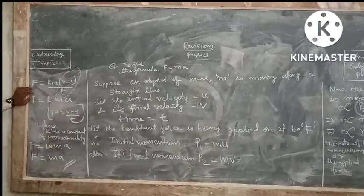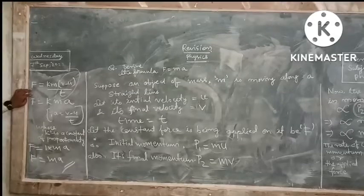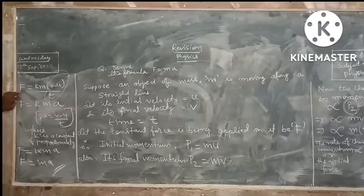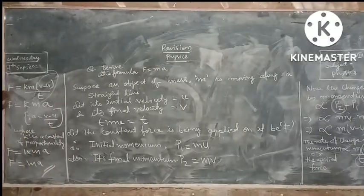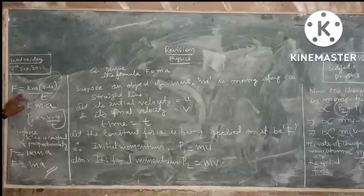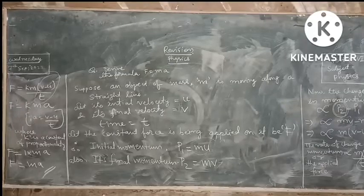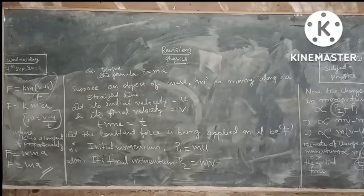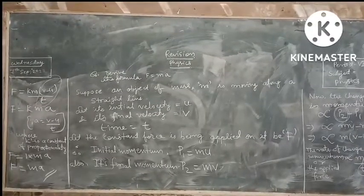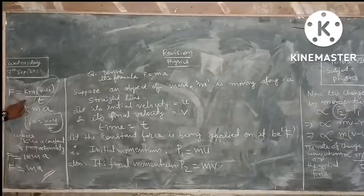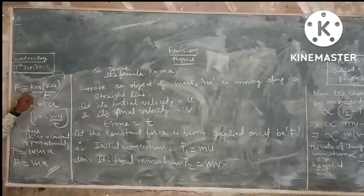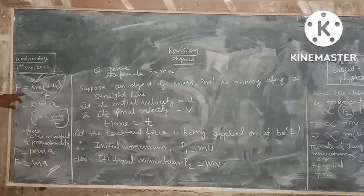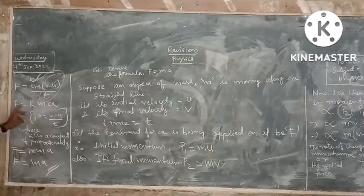Now, as we know that if we want to eliminate the sign of proportionality, we have to change the proportionality sign into an equal-to sign, and simultaneously on the right side we have to multiply by some constant. After changing the proportionality sign into equals, that's why we have put k here, where k is the constant of proportionality. In SI unit, the value of k is 1, so we put k equals 1.